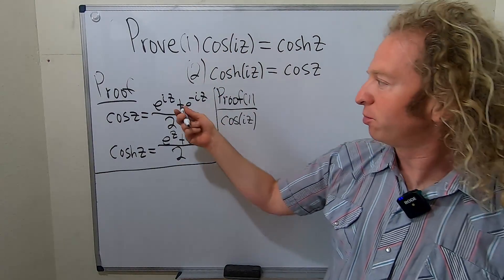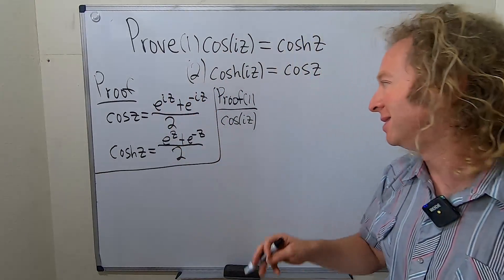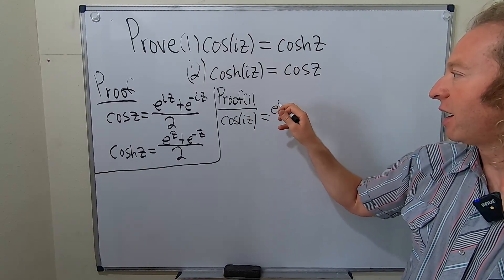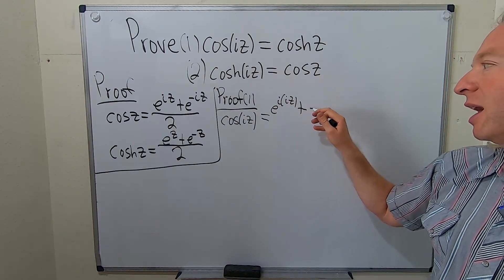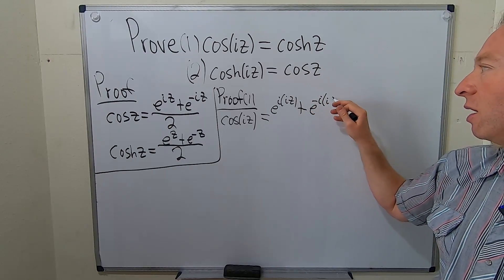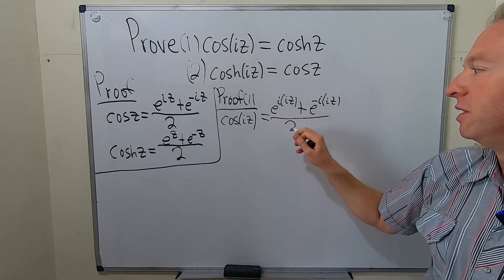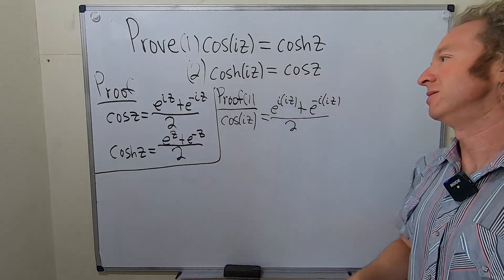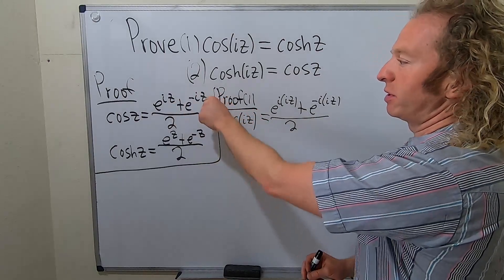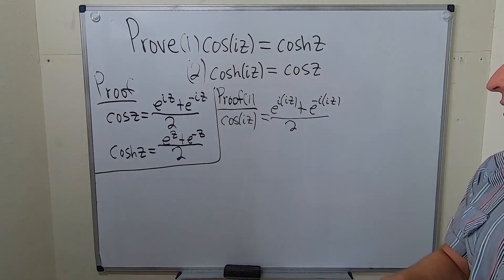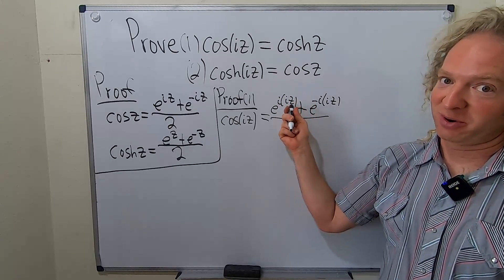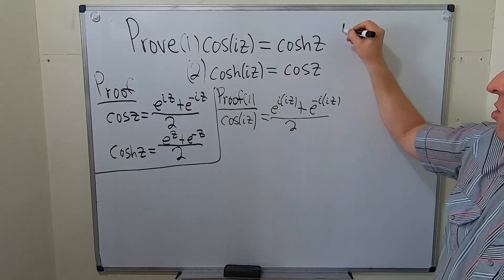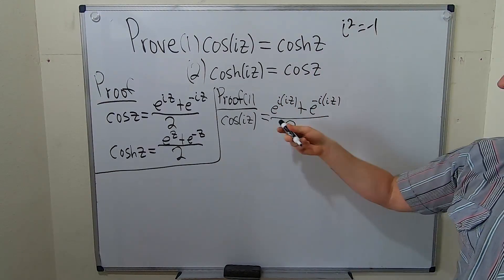So the cosine of iz. Basically we just have to replace all of the z's here with iz. So this is going to be e to the i times iz, and you can skip steps, but again, I haven't done this. So I'm just going to replace all of the z's here with iz. So we put an iz here, we put an iz here. Life is good. Now I'm going to skip some steps. i times i is i squared. So that's negative 1. Remember i squared is negative 1.